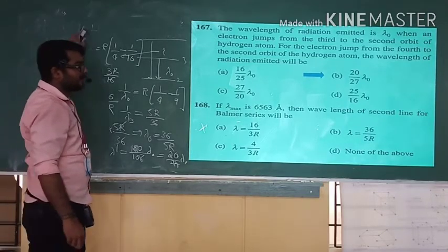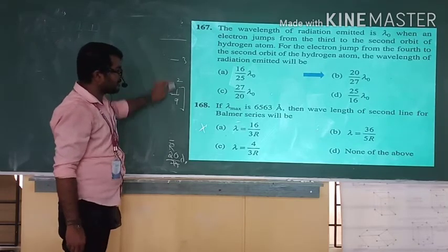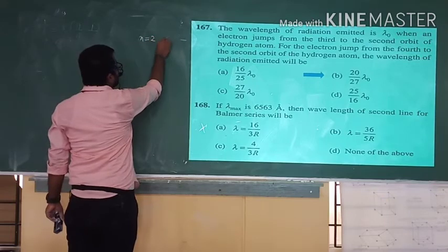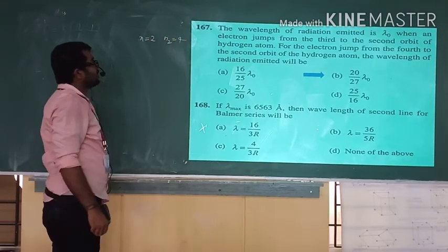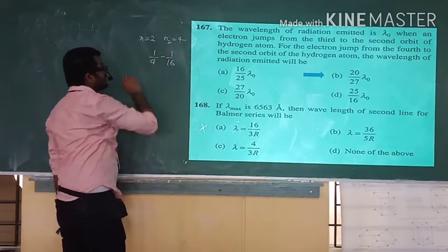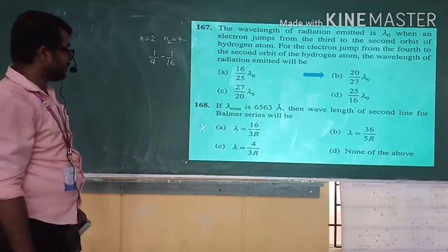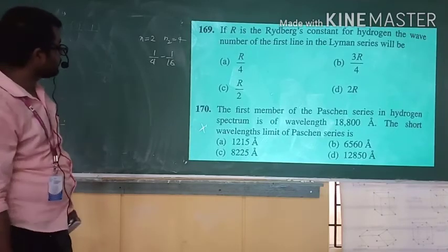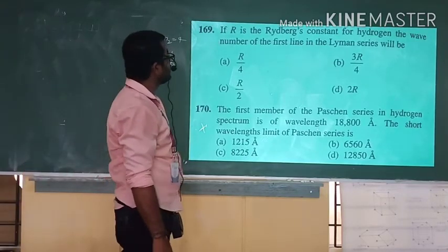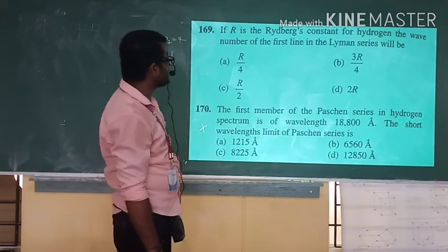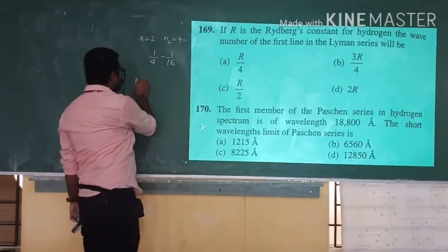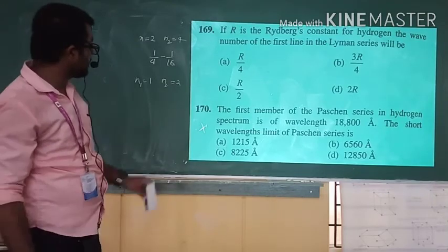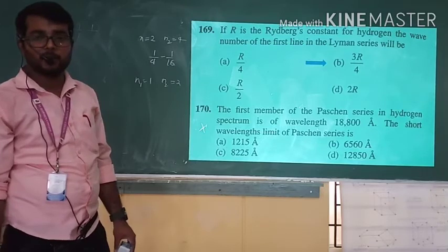If the wavelength of the second line of Balmer series is 6563 Å, find the second line wavelength. Second line: N1 = 2, N2 = 4. Using 1/λ = R(1/4 − 1/16) = 3R/16, so λ = 16/3R. Also, the wave number of the first line of the Lyman series: N1 = 1, N2 = 2 gives 1/λ = R(1 − 1/4) = 3R/4. Wave number = 3R/4.